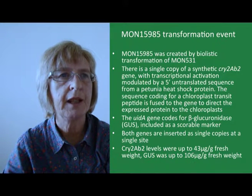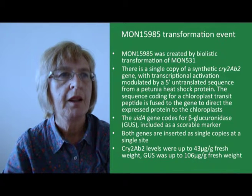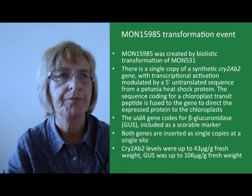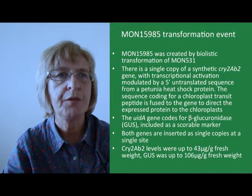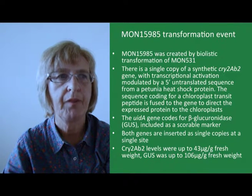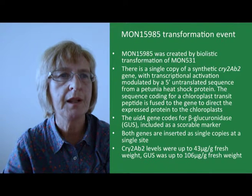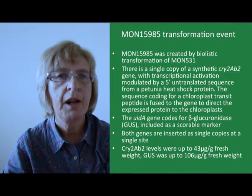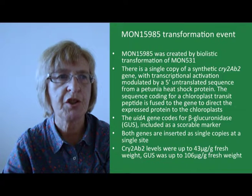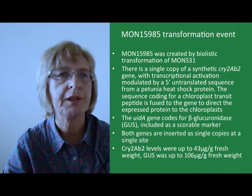MON15985 was subsequently created by biolistic transformation of MON531. There is a single copy of a synthetic Cry2AB2 gene with transcriptional activation modulated by a 5' untranslated sequence from a petunia heat shock protein. The sequence coding for a chloroplast transit peptide is fused to the gene to direct the expressed protein to the chloroplasts, leading to much higher levels of expression due to the presence of multiple chloroplasts in a cell. The UIDA gene codes for beta-glucuronidase (GUS) included as a scorable marker, and both genes are inserted as single copies at a single site. Cry2AB2 levels were up to 43 micrograms per gram fresh weight and GUS up to 106 micrograms per gram fresh weight — considerably higher than expression levels in MON531.